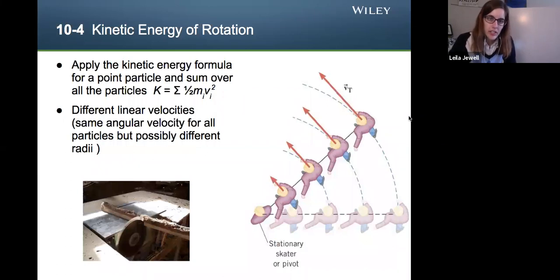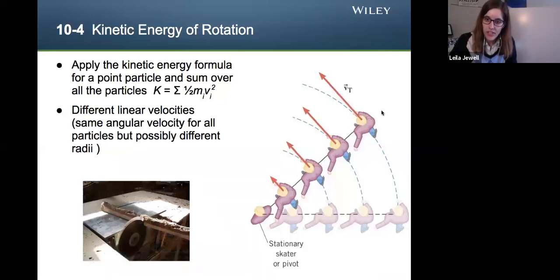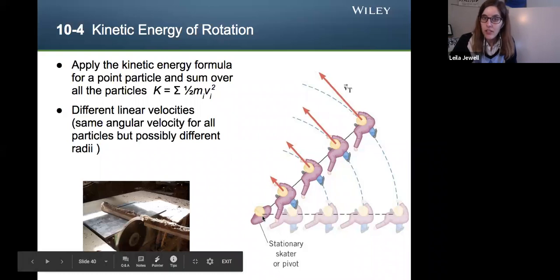What we'll do is we'll take the kinetic energy formula for a point particle and sum over all of the particles. So thinking about our buzzsaw, if we imagine that it's broken down into people like these ice skaters, each of these are some amount of mass that each have their own amount of velocity. The skater on the very outside has to go the fastest to stay in line with the others. This one in the pivot point doesn't have to move at all, velocity zero, and smaller the closer you are to the pivot point.